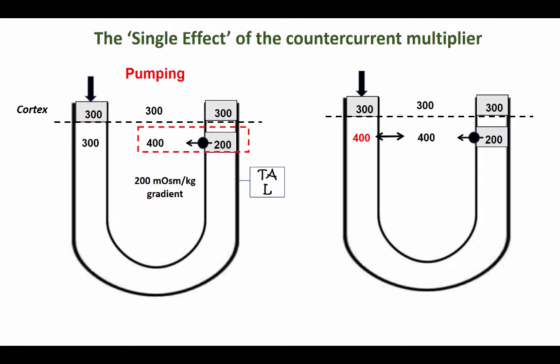This means that the osmolality of the fluid in the ascending limb is going to be less, because the thick ascending limb is water impermeable. The water is going to stay there and therefore the fluid in the thick ascending limb is going to become hyposmotic. The fluid in the medullary interstitium at this level is going to be slightly hyperosmotic.